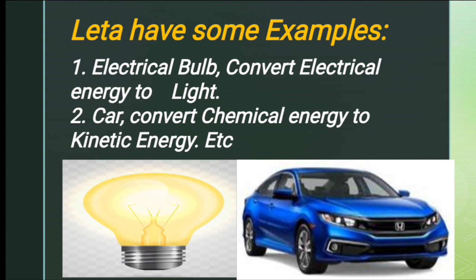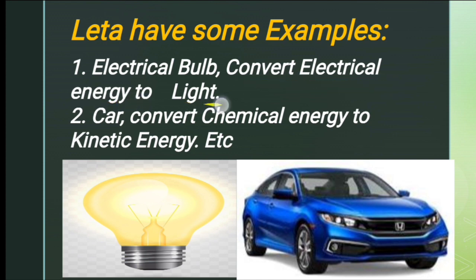Let's have some examples. First example: the electrical bulb. We give electrical energy to the bulb as input, and the bulb gives us light as output. So here, input is electrical energy and output is light. Second example: a car. The input energy given to the car is the chemical energy of petrol, and the output we get is kinetic energy — the motion of the car.